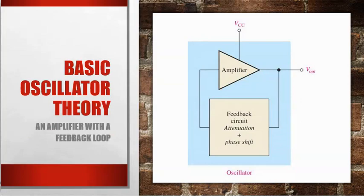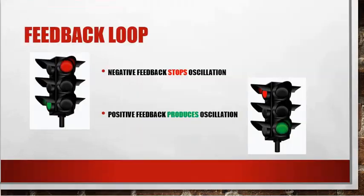Let's look at some basic oscillator theory. What we have is an amplifier with a feedback loop. The feedback loop, negative feedback, stops oscillation. So a normal amplifier, we have negative feedback and we're going to control the amount of gain on it and we won't have oscillation. Positive feedback produces oscillation.